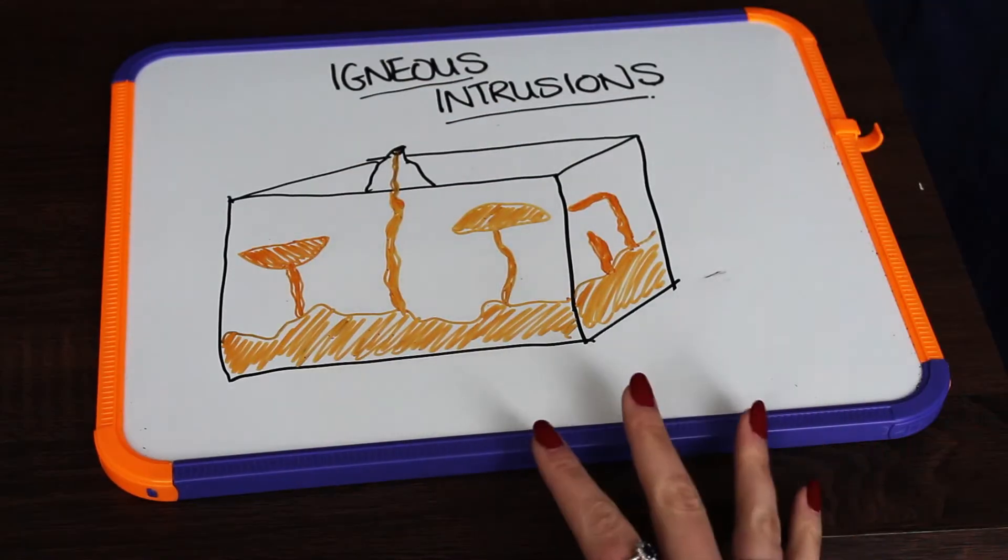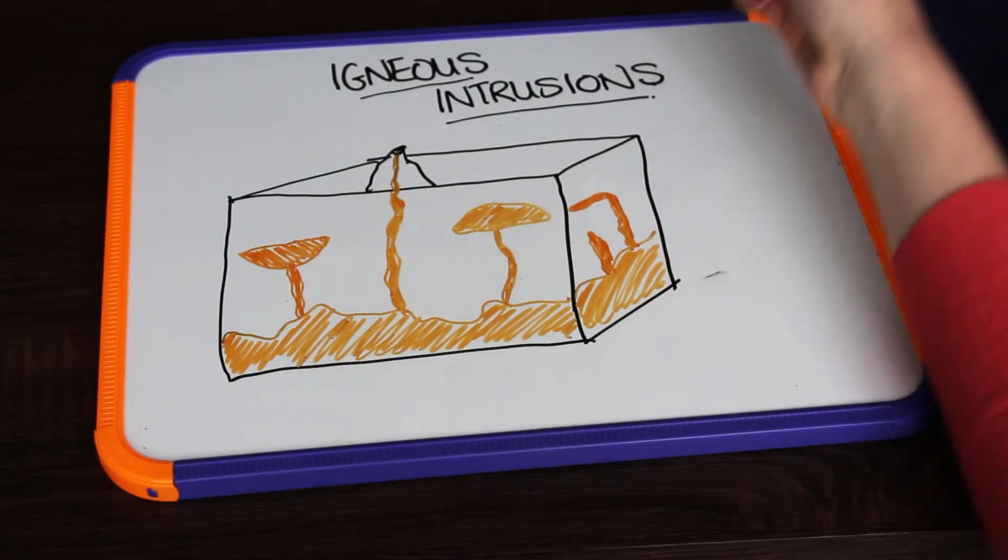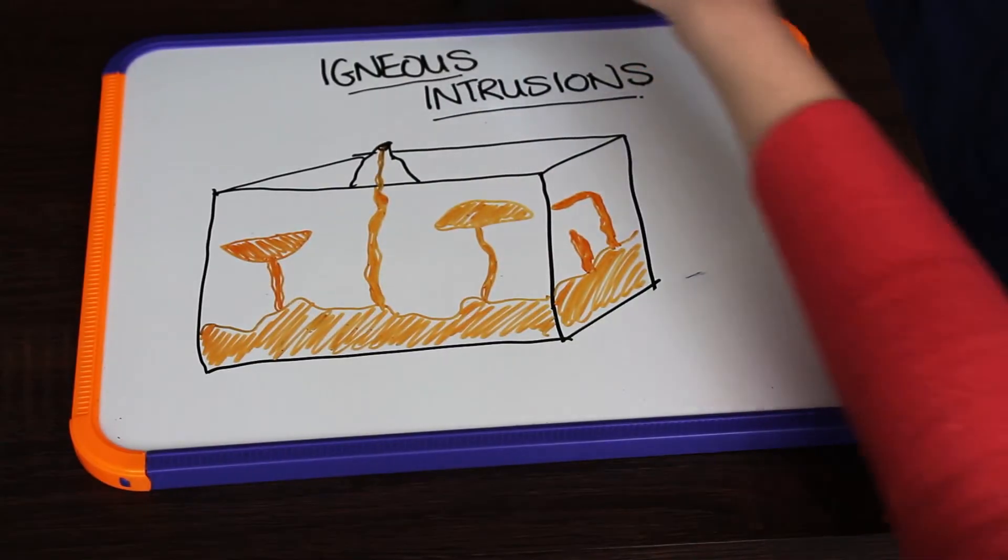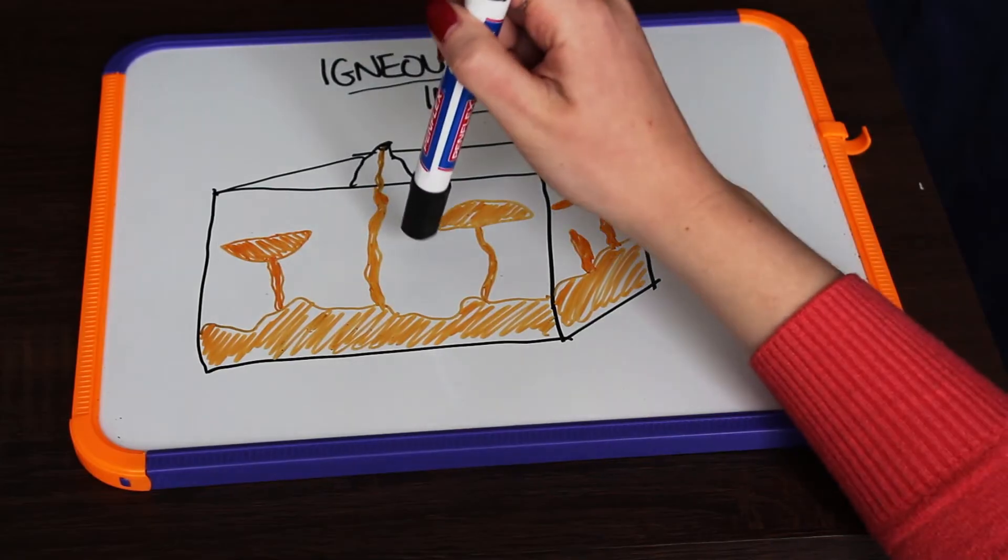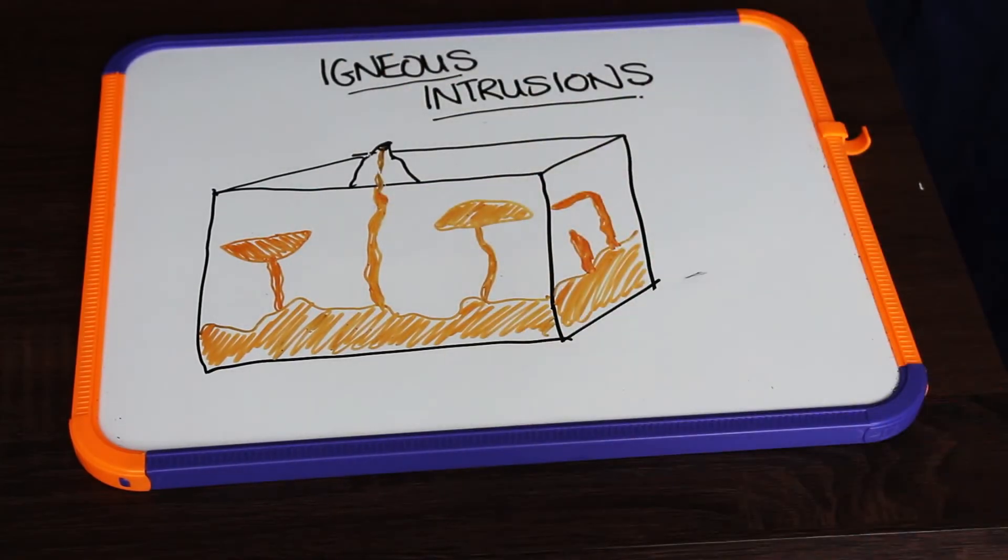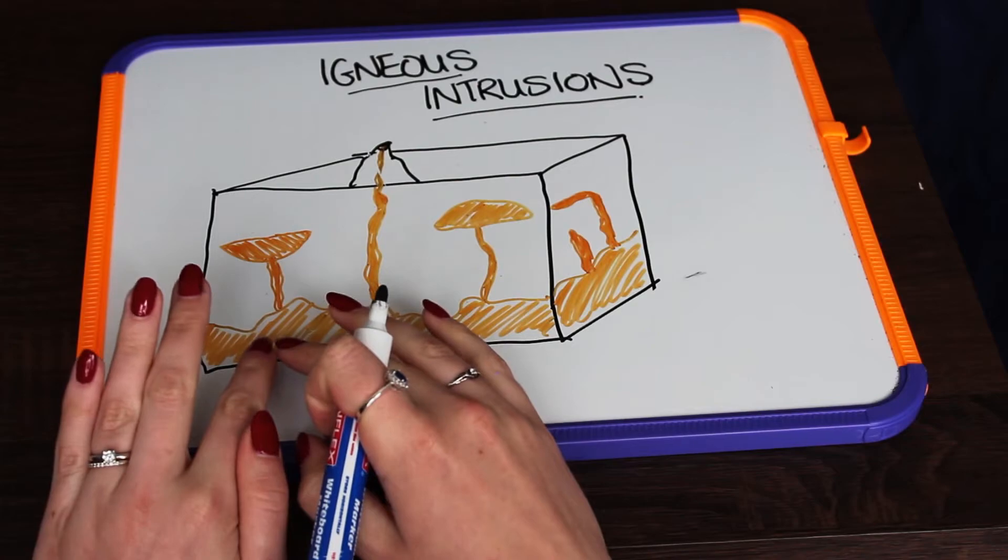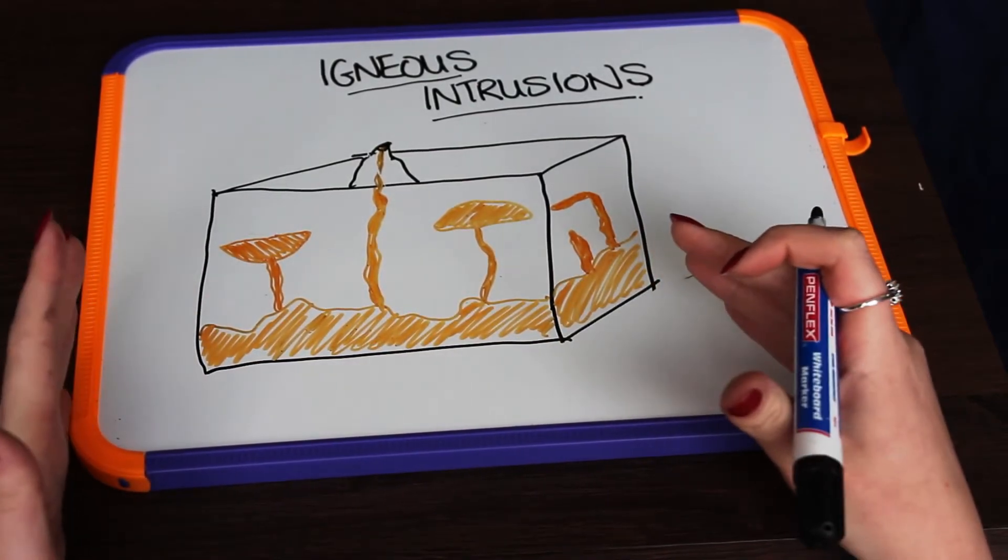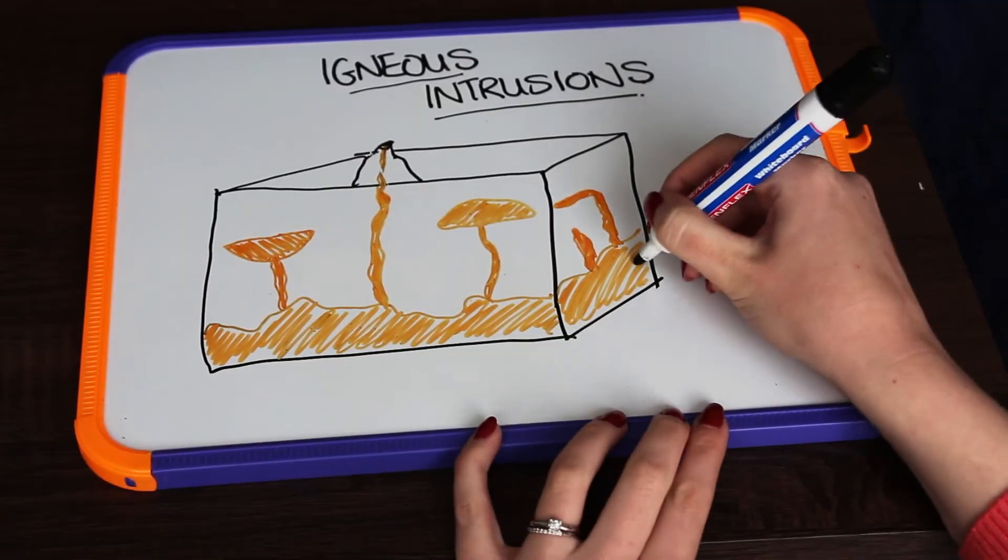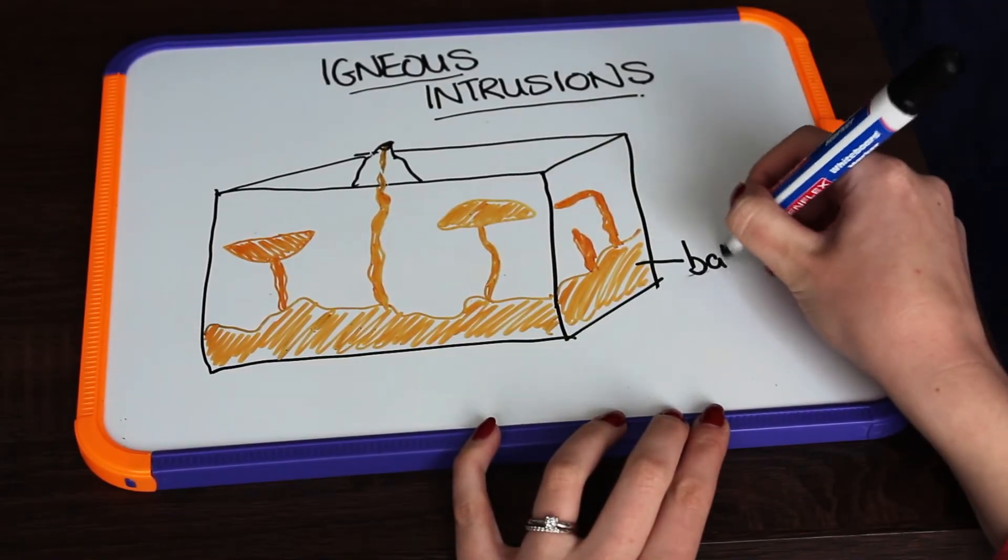Here we have some igneous intrusions. Now intrusions means that our igneous rocks are forming within our earth's crust. So let's have a look at some of these. This main one here at the bottom - it is our biggest and our deepest igneous intrusion - and that is known as a batholith.